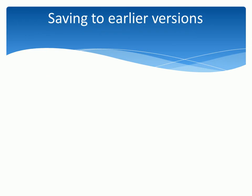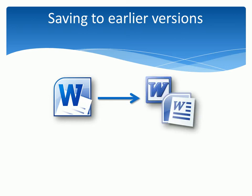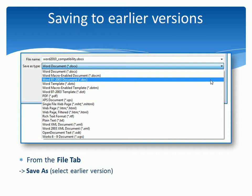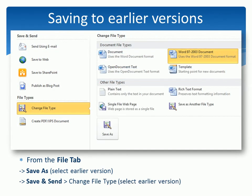Word 2010 gives us the option of saving our new files to an earlier version. From the File tab, click Save As, and choose an earlier format from the Save As Type drop-down. Or, from the File tab, click Save and Send, then Change File Type, as we see here, to select the earlier version.